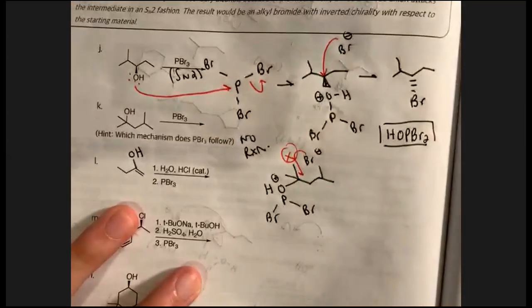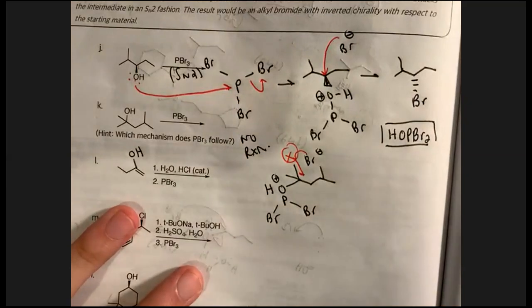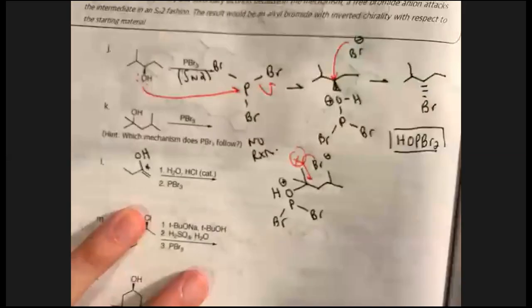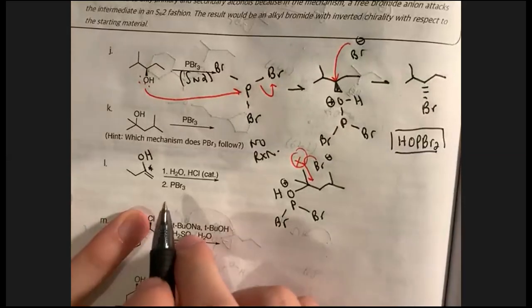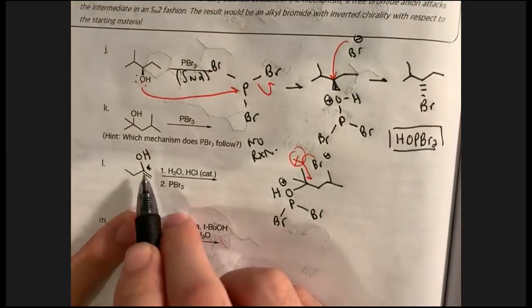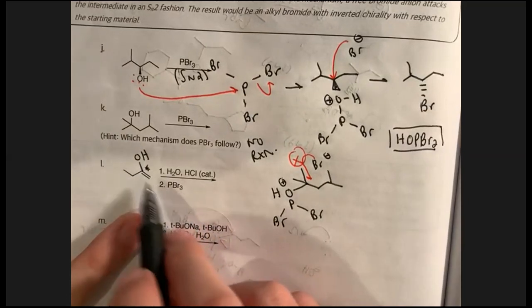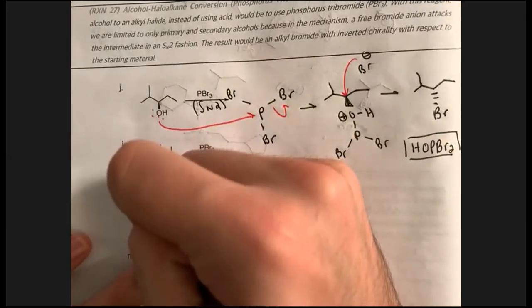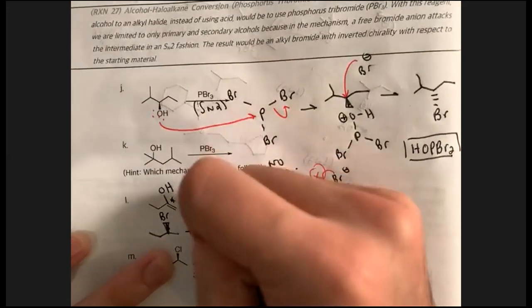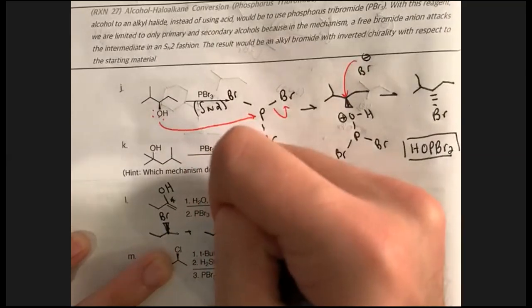For letter L: acid-catalyzed hydration gave an alcohol, but it went through a carbocation intermediate, so it could be wedge or dash. PBr₃ can react because it's secondary, but since SN2 inverts configuration, and the starting material could have been either enantiomer from the carbocation step, we would expect both alkyl halide enantiomers as products.